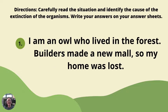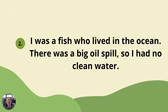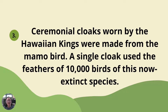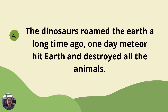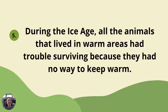Let's apply what we've learned. Directions: Carefully read each situation and identify the cause of extinction of the organism. Write your answers on your answer sheets. Number 1: I am an owl who lived in the forest. Builders made a new subdivision, so my home was lost. Number 2: I was a fish who lived in the ocean. There was a big oil spill, so I had contaminated water. Number 3: Hawaiian cloaks worn by Hawaiian chiefs were made from the Mamo bird. A single cloak used the feathers of 10,000 birds of this mountain-dwelling species. Number 4: The dinosaurs roamed the Earth a long time ago. One day, a meteorite impact destroyed all the animals. Number 5: During the ice age, all the animals that lived in warm areas had trouble surviving because they had no way to keep warm.